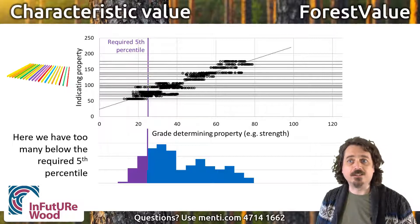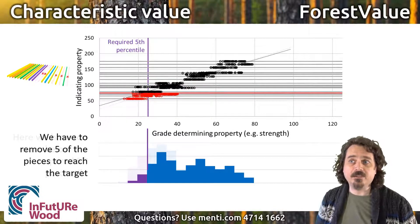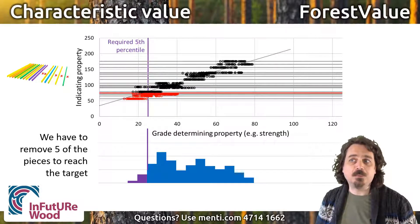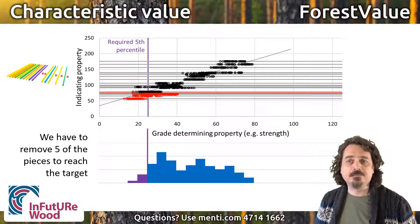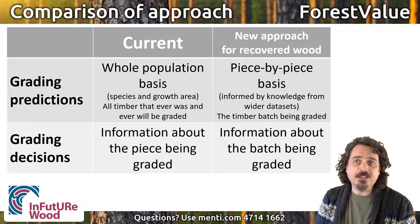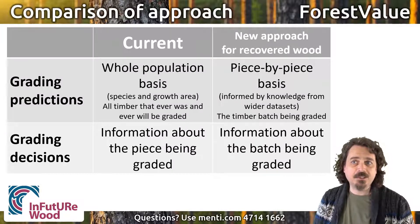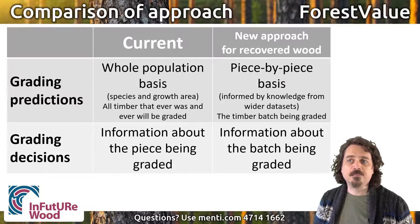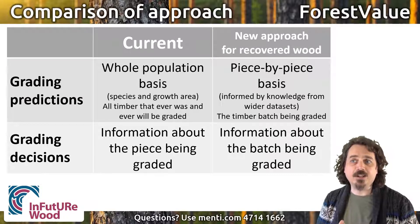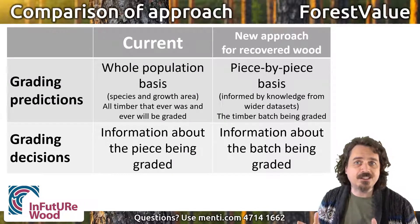We compare that to what we need for the target strength class or the application, and if necessary, we remove some of the pieces from the set to raise the characteristic values. When we remove an actual piece, we remove all the associated possible parallel universes pieces in that dataset. In simple terms, comparing to how we grade new timber at the moment, we go from properties predictions made on populations of timber to making properties predictions on a piece-by-piece basis. But we also go from making grading sorting decisions on individual pieces to making grading decisions based on information from sets of pieces.